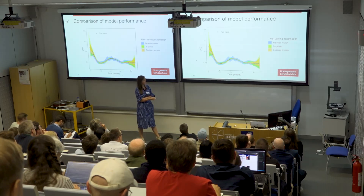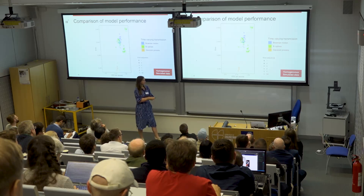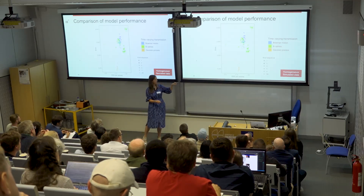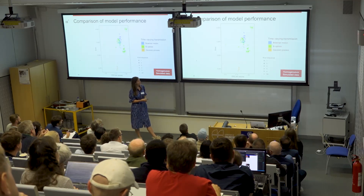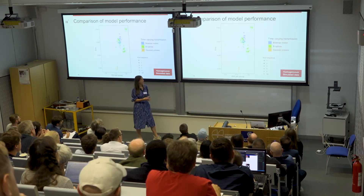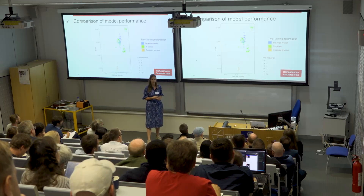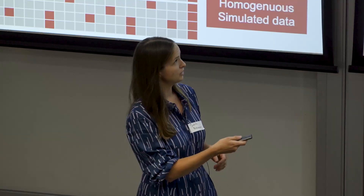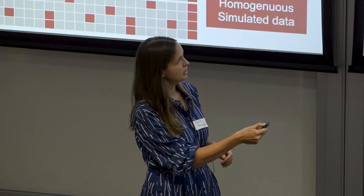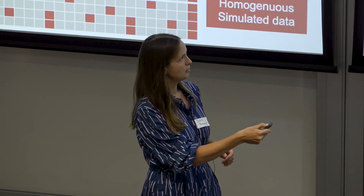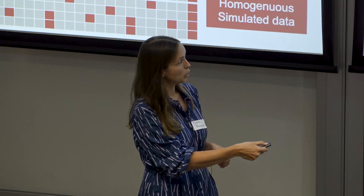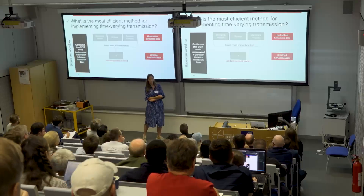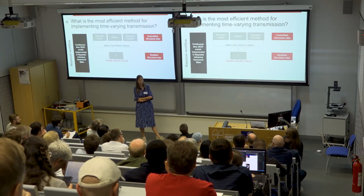Looking at accuracy on the y-axis and effective sample size per second on the x-axis — where left is slow and right is fast — the splines (green points) tend to be faster than Brownian motion and Gaussian processes. Performance also depends on the exact knot sequence used: fewer knots means faster but less accurate evaluation, while more knots gives more accurate results. For this reason we selected splines as the method to validate with stratified simulated data.